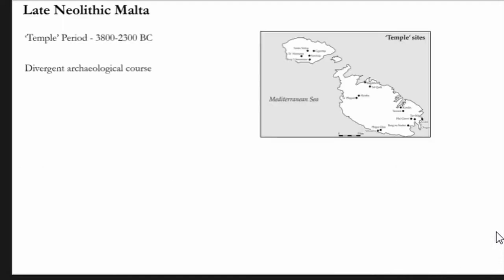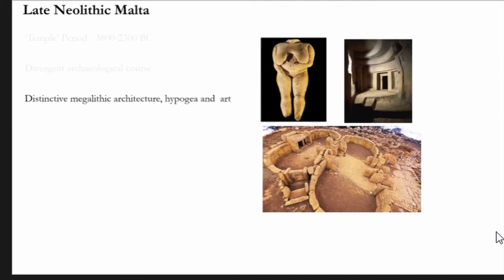Late Neolithic Malta spans the period of about 3,800 to 2,300 BC, and this is a point in time when Malta takes a very divergent and unique archaeological course. At this time we see the development of very distinctive megalithic architecture, really sophisticated art, but also very complex mortuary sites. This has previously been explained as either being a result of physical isolation, cultural insularity, or perhaps related to a strong island identity.